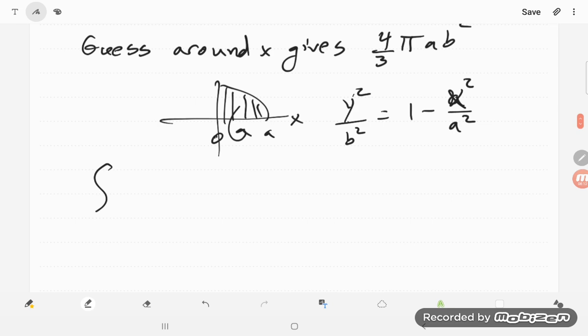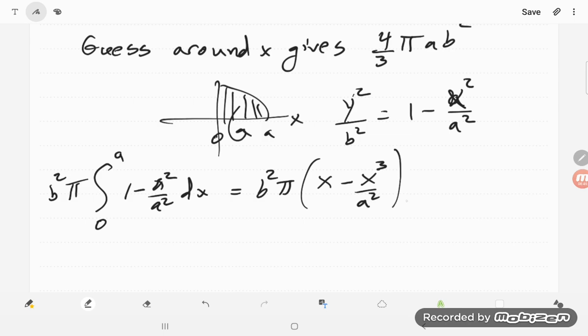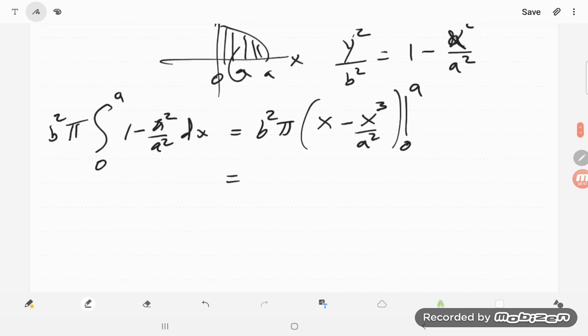And we will have, so this goes from 0 to a. We have our pi here. We'll get a b squared out front like we had the a squared before. And then I need 1 minus x squared over a squared dx. Now the same old thing, b squared pi. And I get x minus x cubed over 3a squared from 0 to a.